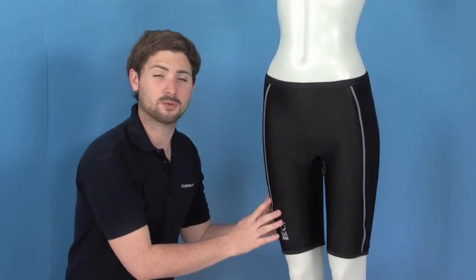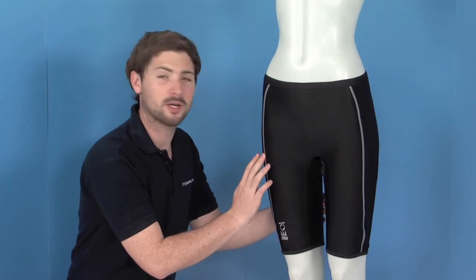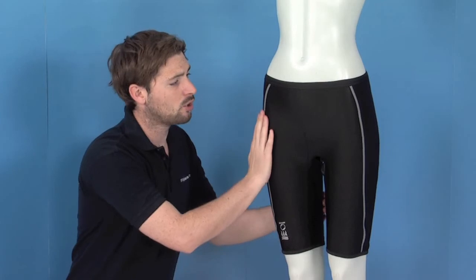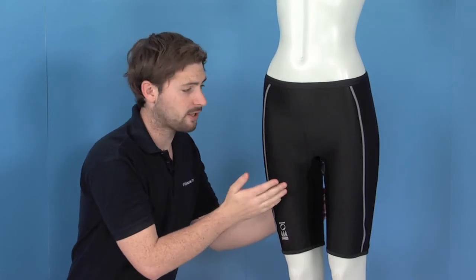All the stitching, as you can see, is on the outside. This just prevents any rubbing or friction once you've got them underneath either your dry suit or your wetsuit, again making them very comfortable to wear.